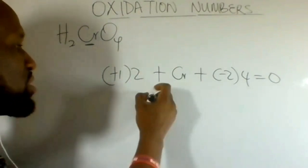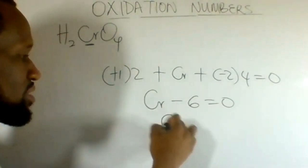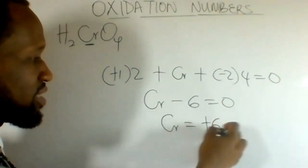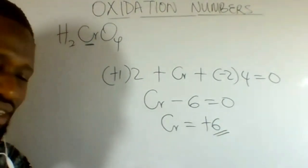If we solve this out, it becomes Cr minus 6 equals 0. Therefore Cr here is plus 6. The oxidation number of chromium in chromic acid is plus 6.